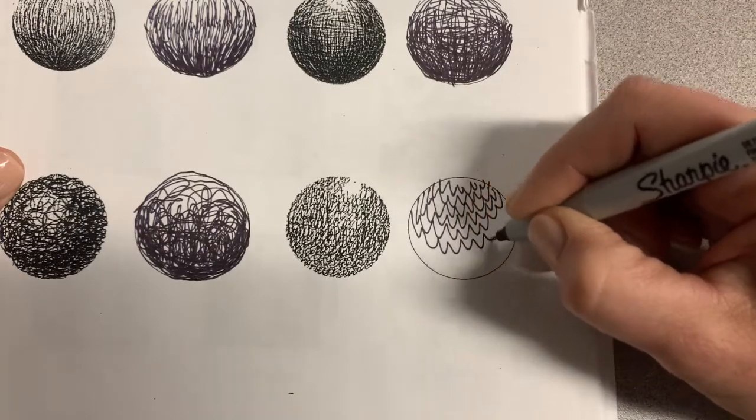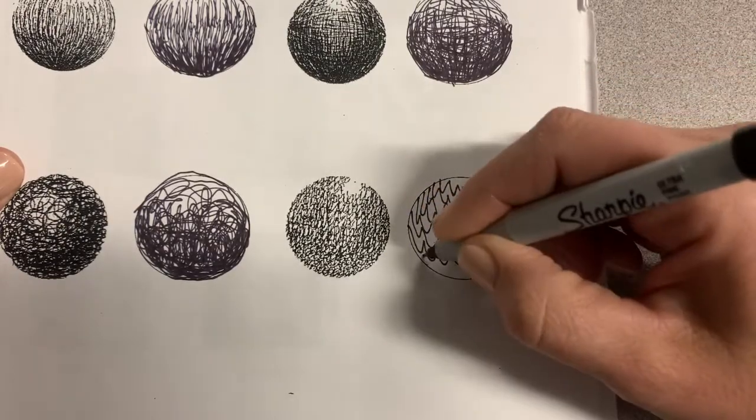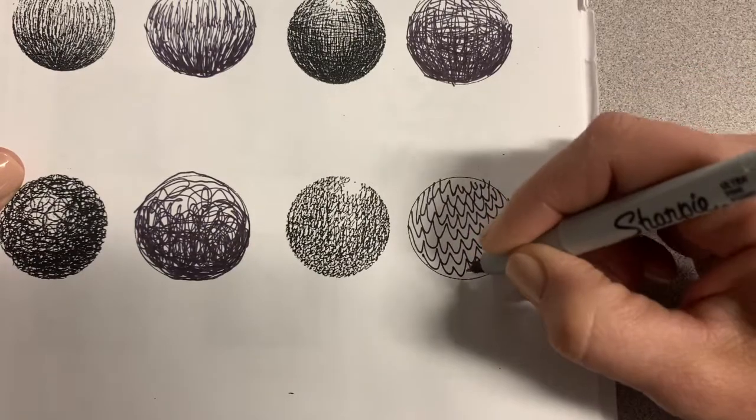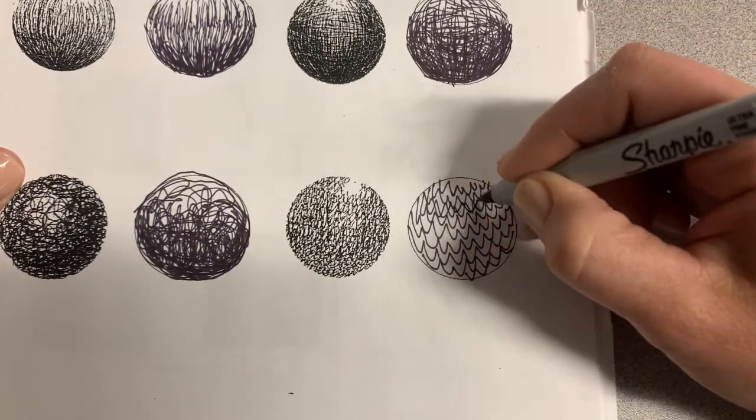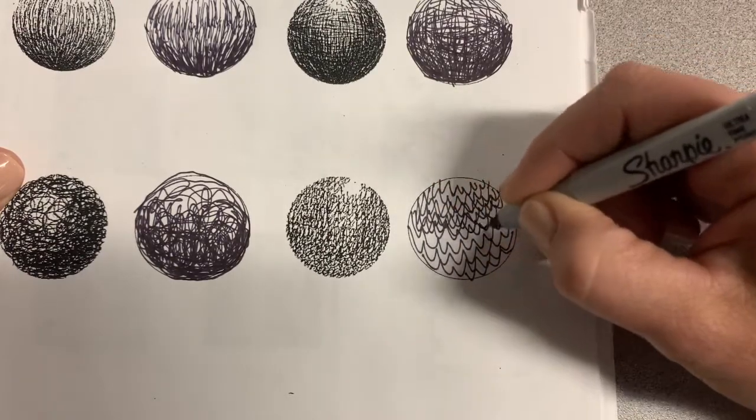You want to start by filling your circle with the wavy lines. Notice that I'm still paying attention to line direction, trying to get my wavy lines to go in a more curved line direction following the contours of that circle.